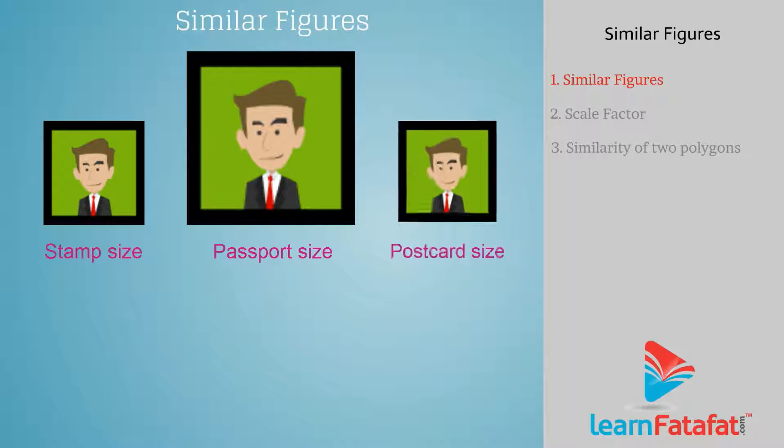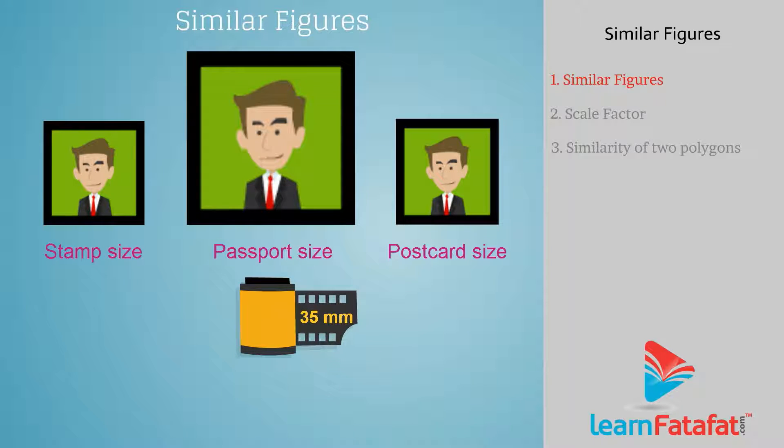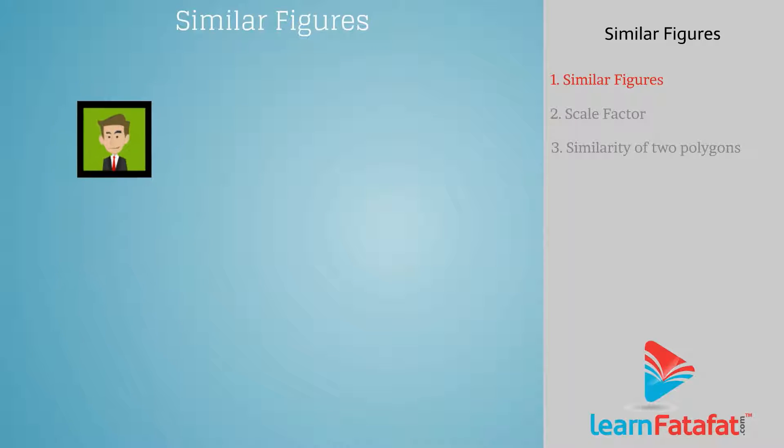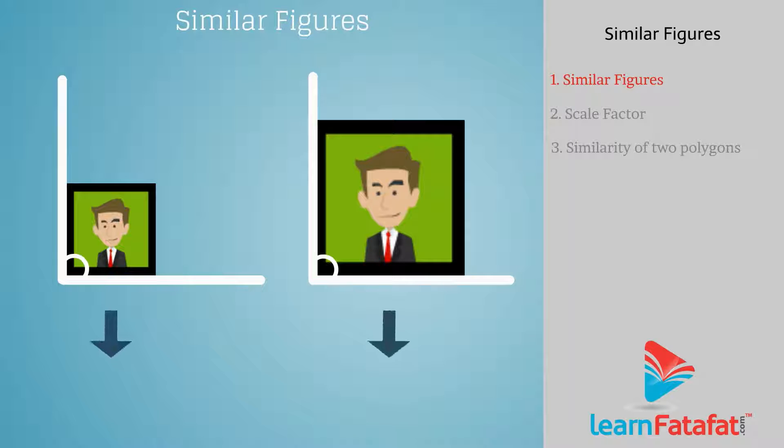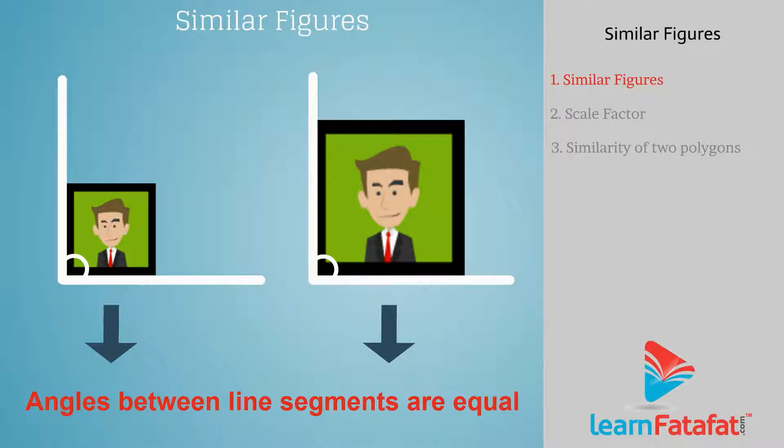For stamp size, passport size, and postcard size photographs, a photographer takes a photograph on 35mm small size film and then enlarges it into a bigger size, 45mm or 55mm. Line segments of the smaller photograph are increased in ratio 35 to 45 or 35 to 55. Line segments of the bigger photograph are decreased in ratio 45 to 35 or 55 to 35. Angles between any pair of corresponding line segments in two photographs of different sizes are always equal.